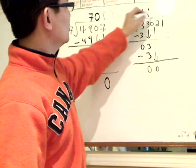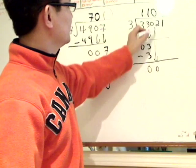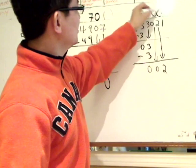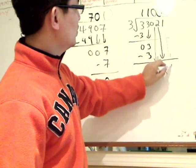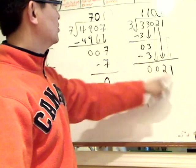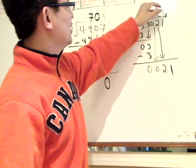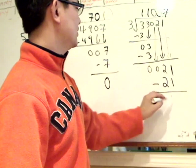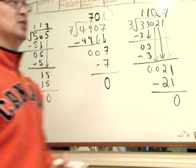3 cannot go into 0. So again, put a placeholder there. Bring down the 2. 3 cannot go into 2 either. Another placeholder. Bring down the 1. So 21 now. 3 go into 21, 7 times. 7 times 3 is 21, minus the difference of 0.